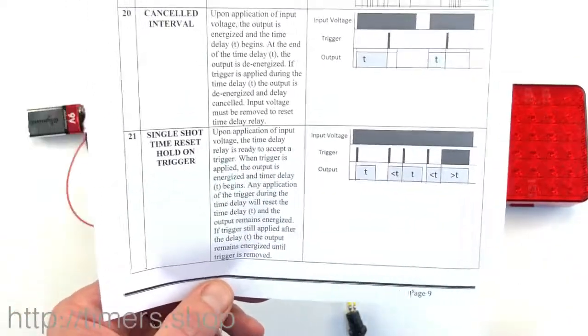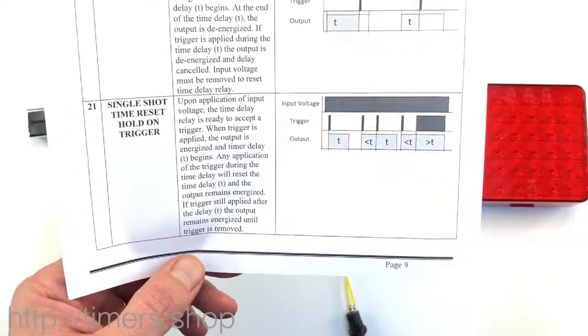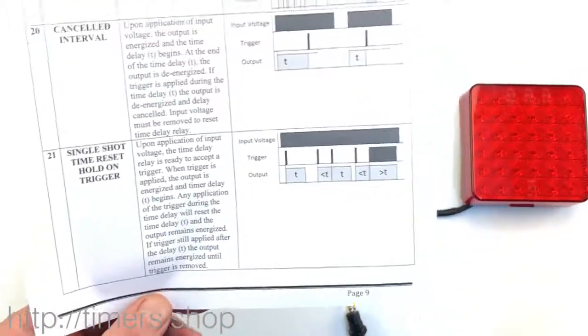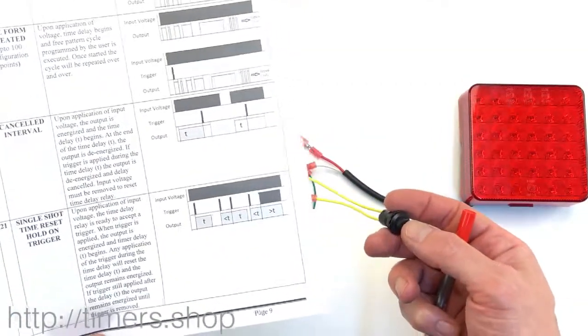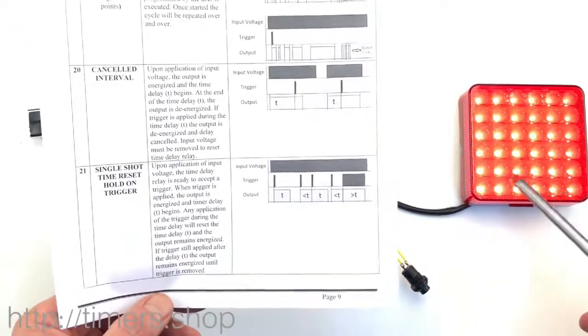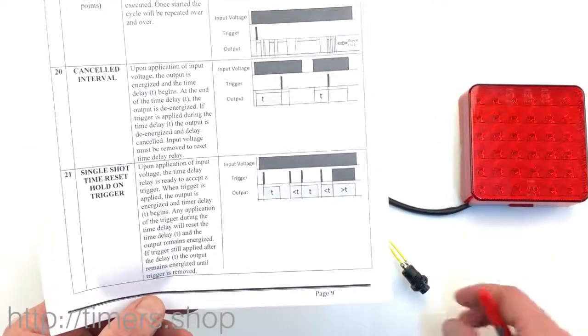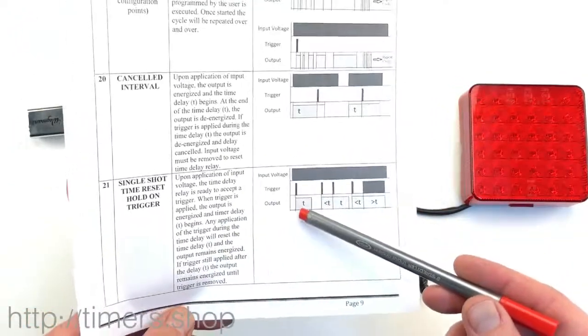So where can you use it? You can use it, for example, to make a light or device work the following way. When you push the button once, your light will stay on for five seconds, let's say if I set that T to one second.